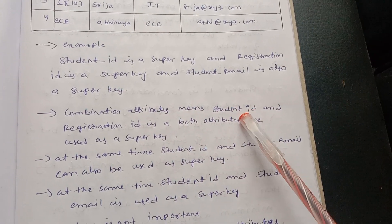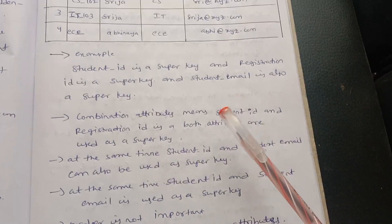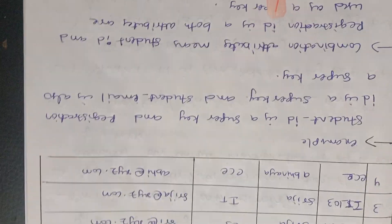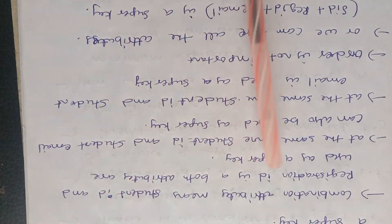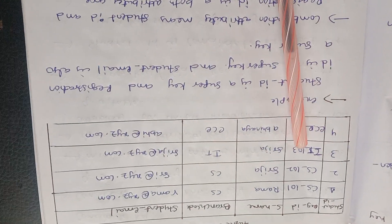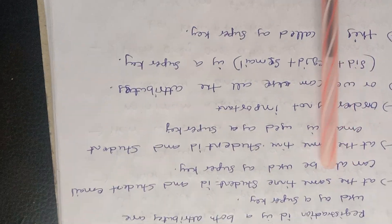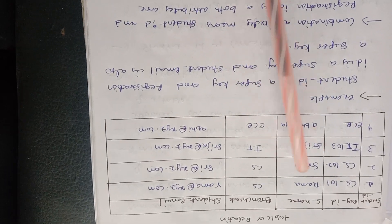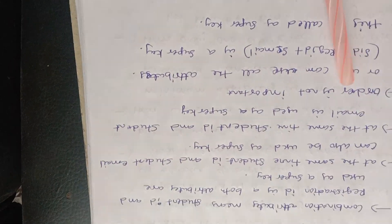A combination of attributes — for example, student ID and registration ID together — can also form a super key. Similarly, student ID and student email can also be a super key. These combinations are all valid super keys.